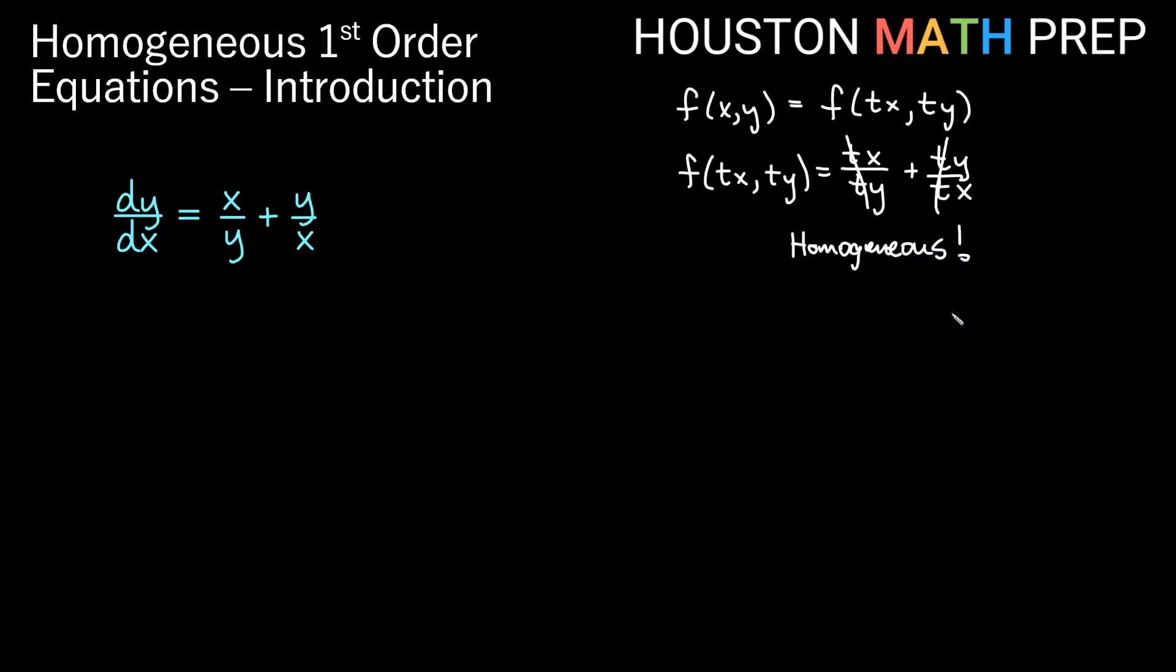And we'll go ahead and use our substitutions. So remember our substitution was y equals v times x. And this was a product rule. So remember our additional substitution we needed was that dy was equal to vdx plus xdv. So we'll go ahead and take that and substitute it in. Remember the goal is to get a separable equation. So our dy on the top here becomes vdx plus xdv all over dx equals, now remember we're changing the y's into vx's, but the x's will stay the same. So we get x/vx plus vx/x.